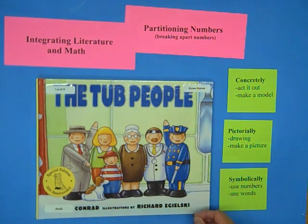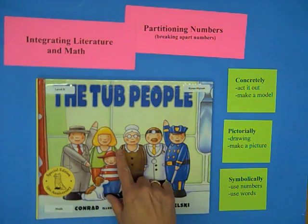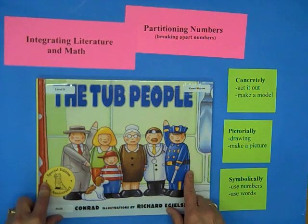So in kindergarten, one of the outcomes is for the students to know how to represent numbers up to 10. So the book that I'm taking is called The Tub People.